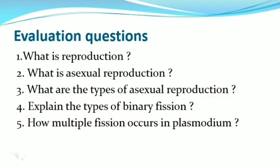In this video, we have discussed: what is reproduction, what are the types of reproduction, what is asexual reproduction, what are the various types of asexual reproduction, what is fission, what are the various types of fission, binary fission, how binary fission occurs in Amoeba, Paramecium, Euglena, and Ceratium, what is multiple fission, and how multiple fission occurs in Plasmodium and Amoeba. We can see the continuation of this topic in the next video.